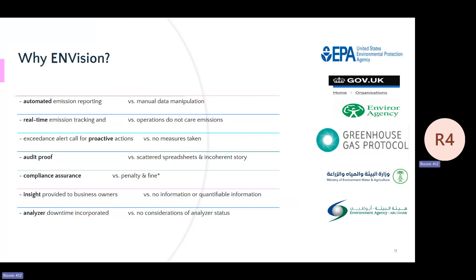Envision provides automated emission reporting versus manual data manipulation, and real-time tracking that allows proactive actions. The rule requires you to record all exceedances, their reason, root cause, and corrective action — and we have the platform just for that.